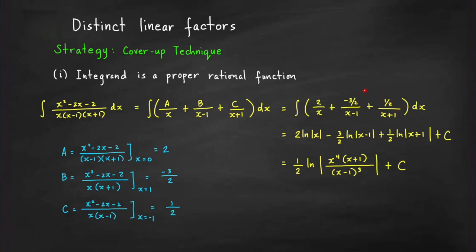This expression can be easily integrated. The integral equals 2 ln|x| minus 3 halves ln|x minus 1| plus 1 half ln|x plus 1| plus C. Using properties of logarithms, we can write this as a single logarithm: 1 half ln of |x⁴(x + 1) / (x − 1)³| plus C. The constant C can also be absorbed inside the logarithm since any real number can be written as a logarithm.